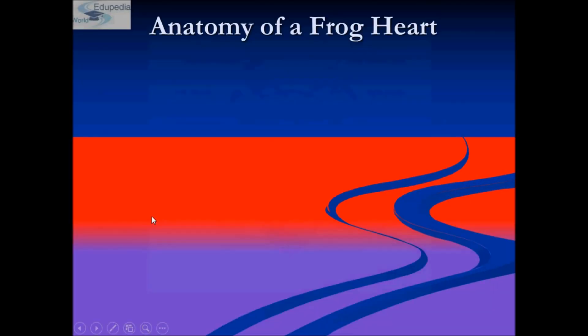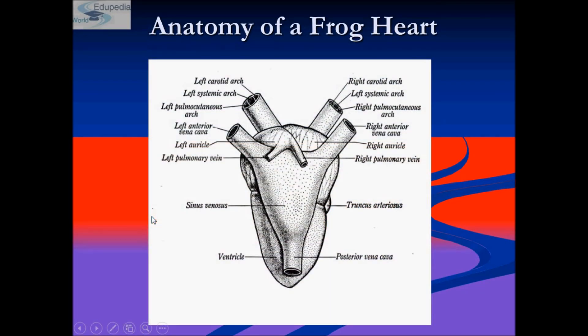This is the anatomy of the frog's heart. The vascular system of the frog is a very well-developed closed type. Frogs have both a blood vascular system involving heart, blood vessels, and blood, as well as a lymphatic system consisting of lymph, lymph channels, and lymph nodes.